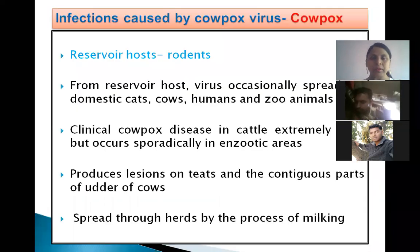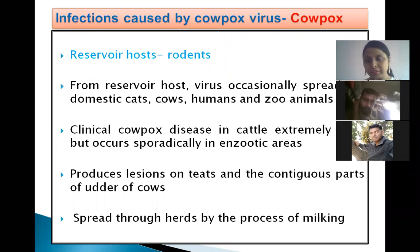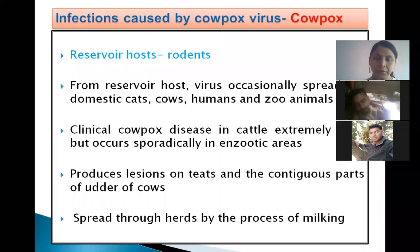Coming to the genus Orthopoxviridae, Cowpoxvirus causes cowpox and its reservoir host is rodents. In the reservoir host, the virus does not cause any disease but helps in the spread of the disease to other animals. From the reservoir host, the virus occasionally spreads to domestic cats, cows, humans, and zoo animals.